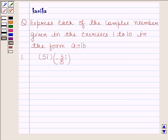Hi and welcome to the session. I am Kanika and I'm going to help you solve the following question. The question says: express each of the complex numbers given in exercises 1 to 10 in the form A plus iota B. The first complex number is 5 iota times negative 3 over 5 iota.